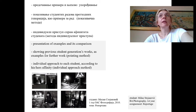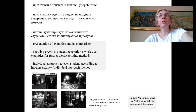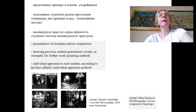You present examples, compare them, show previous students' generations' work — these serve as examples for students doing a similar type of assignment. This can be called a pointing method. Later on, you make an individual approach to each student according to his or her affinity as an artist — this is the individual approach method. If we think about teaching photography methodologically, you can make a structure that serves as a backbone for your teaching method.